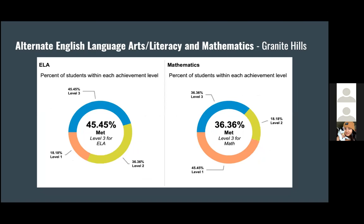For the alternate assessment for English language, Granite Hills has 45.45%, and mathematics being 36.36%. These are still very high compared to El Cajon. English is the dominant language, but even with the alternative test, students are still scoring at pretty high levels.